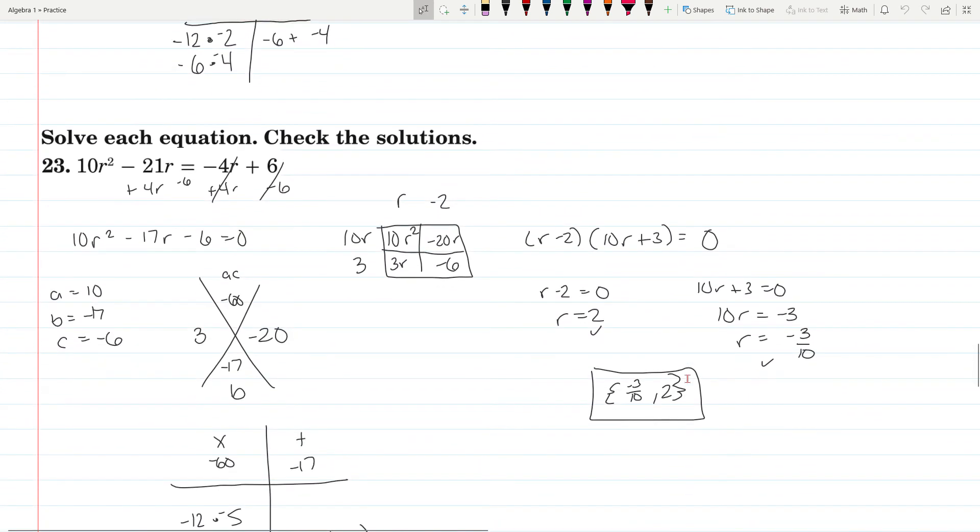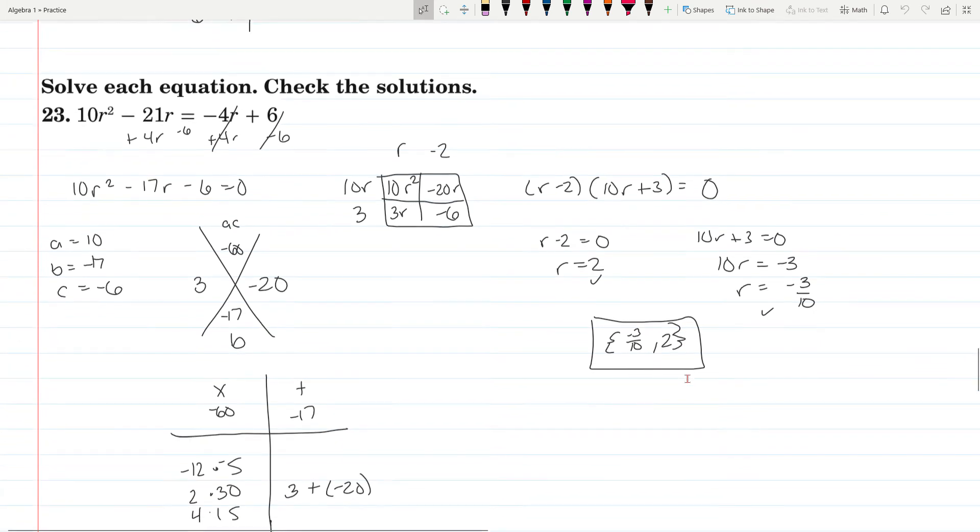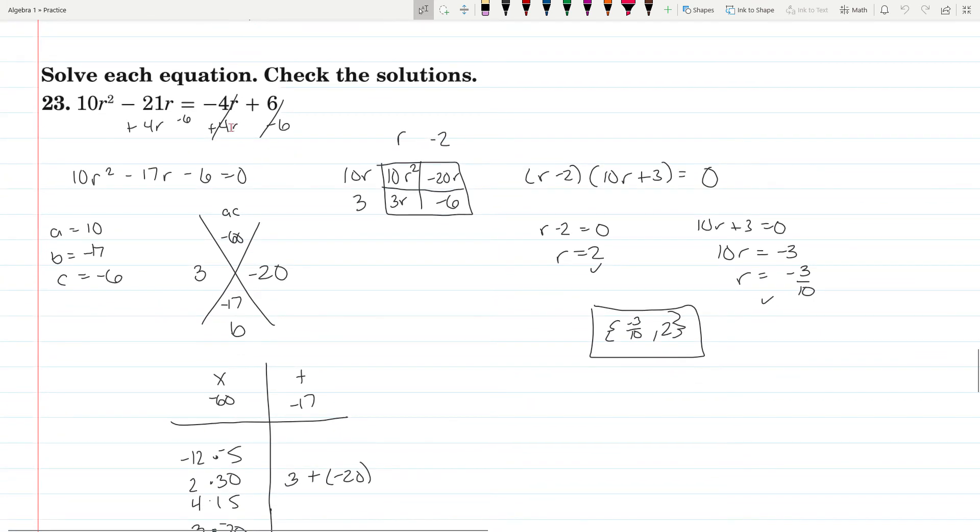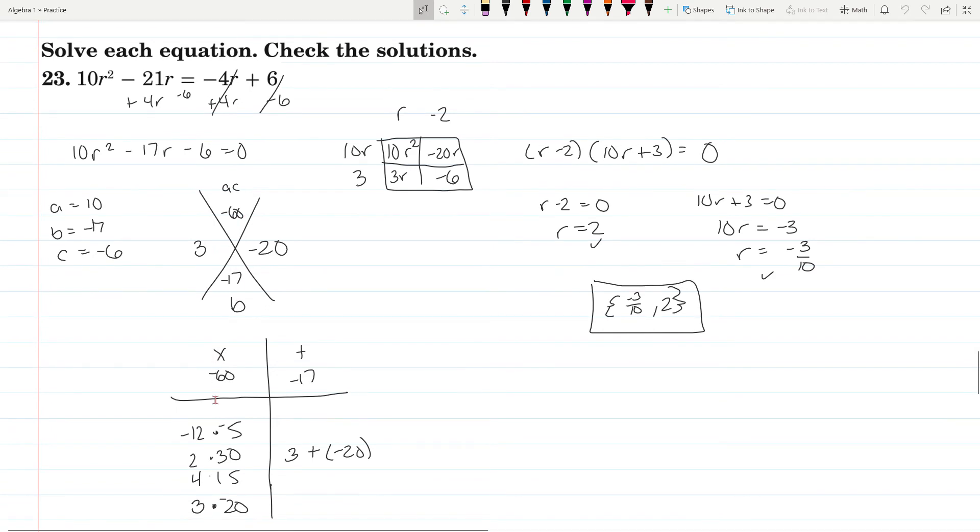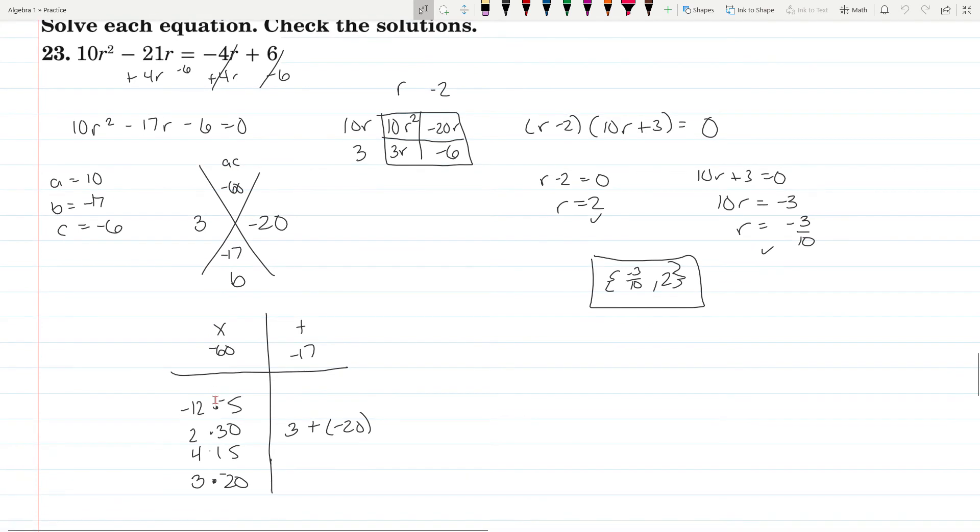Now problem 23, this isn't set equal to 0, so you need to make this equal 0. Let's add 4r to both sides, subtract 6 from both sides. You're left with 10r squared minus 17r minus 6 equals 0. So A is 10, B is negative 17, C is negative 6. We're looking for a product of negative 60 that adds up to negative 17. And this one took me a while to solve. I listed all these factors. I can't get there.